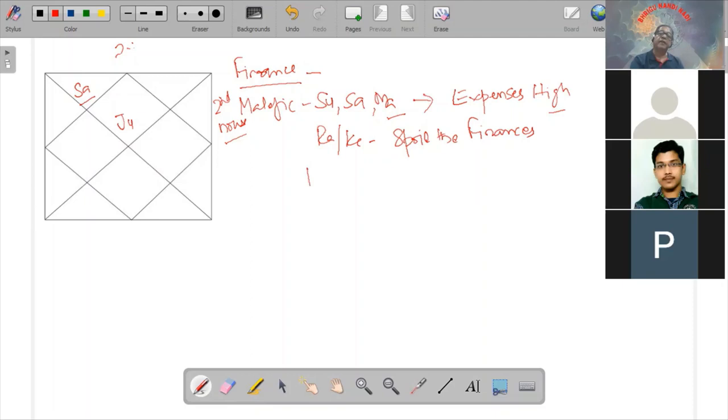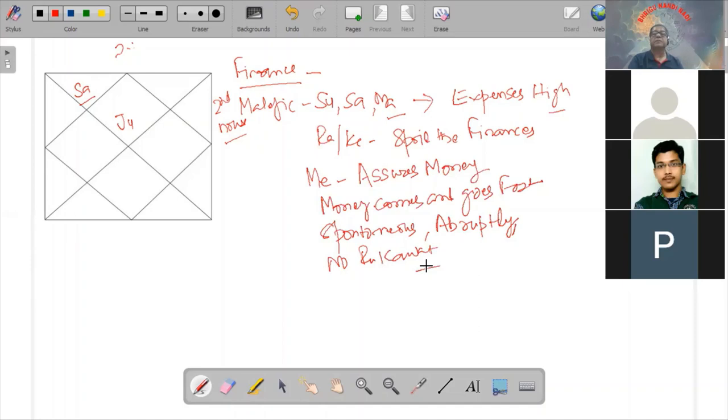Mercury assures money. Money comes and goes fast. Spontaneous. It's a spontaneous process, Mercury ke badness. Abruptly, bina rokade ke aata rahe ga. No rukawatt. Koi rukawatt nahi hai, paise aane jane pe. Mercury ye assurance dayta hai, Jupiter se agle baon.